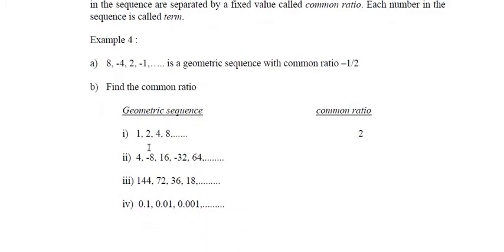Let's look at another example: 1, 2, 4, 8. To determine whether this is geometric or arithmetic, let's try to find whether this sequence has a common ratio or common difference. 2 minus 1 is 1, 4 minus 2 is 2, 8 minus 4 is 4 — so this sequence does not have a common difference. Now let's try common ratio: 2 divide 1 is 2, 4 divide 2 is 2, 8 divide 4 is 2. This sequence has a common ratio, therefore this is an example of a geometric sequence.